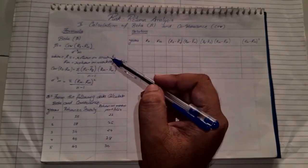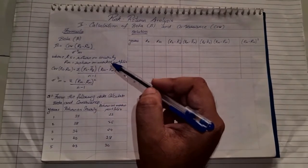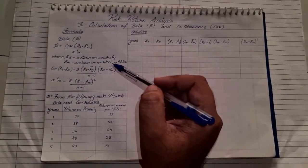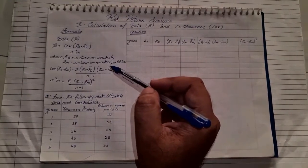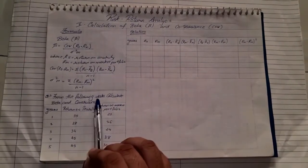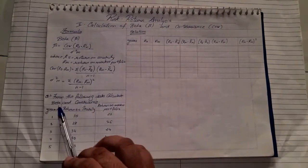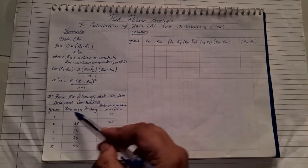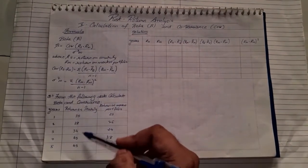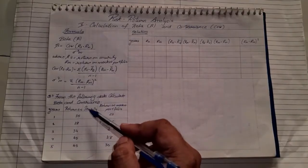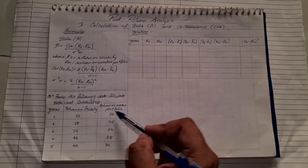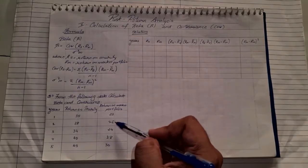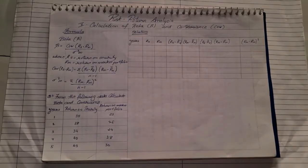Looking at the formula it seems a little complicated, but while actually solving it, it is very simple. Let us see how to solve sum number one. From the following data, calculate beta and covariance. They are giving you the number of years, return on security (RS), and return on market portfolio (RM).